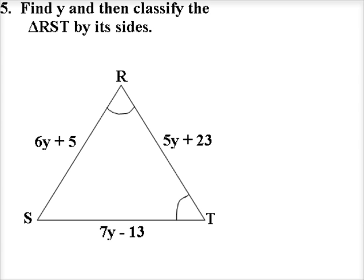We have congruent angles, angle R and angle T, and what that tells me is I have an isosceles triangle for sure. In particular, since these are base angles, then RT is the base and so RS and ST would be the congruent legs.